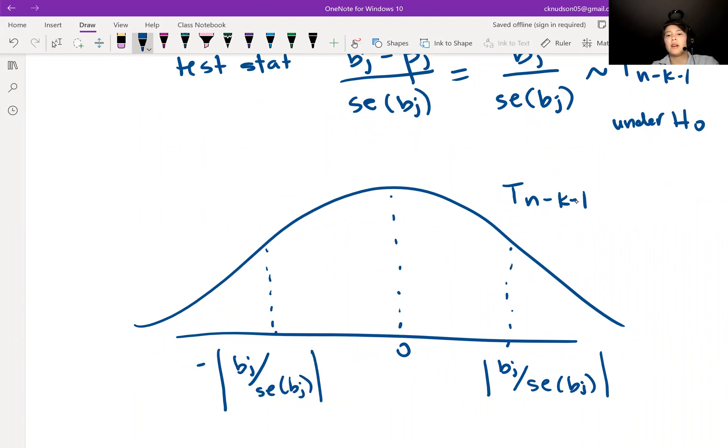So then we calculate our P value by finding the area of those two tails there. We use the fact that it's a T distribution with N minus K minus one degrees of freedom to calculate that P value.